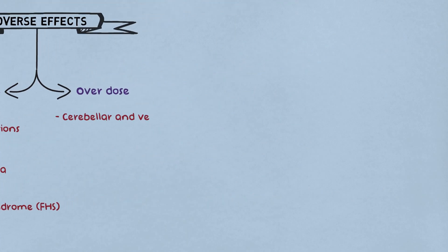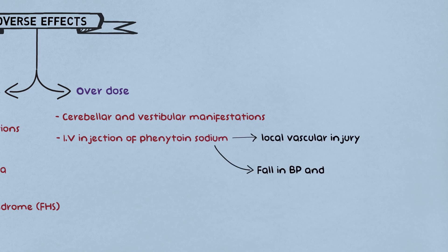Overdose of phenytoin may result in cerebral and vestibular manifestations like ataxia, vertigo, nystagmus. Intravenous injection of phenytoin sodium may cause local vascular injury and also results in fallen BP and cardiac arrhythmias.